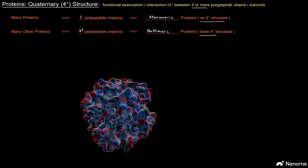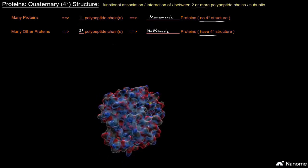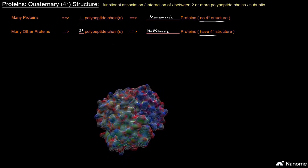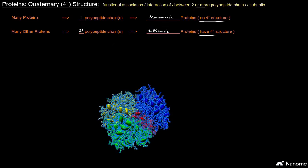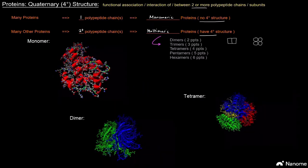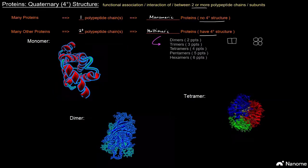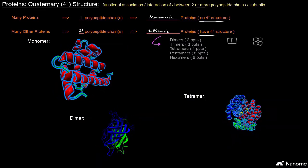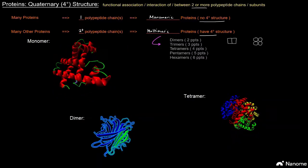Now depending on how many polypeptide chains make up a certain protein, they'll have an even more specific name. So like dimers, trimers, tetramers, pentamers, hexamers for two, three, four, five, and six polypeptide subunits respectively.